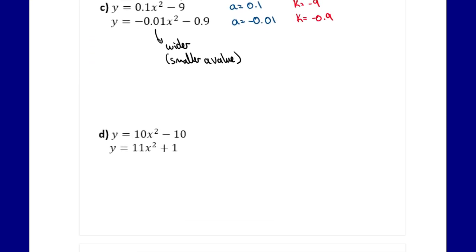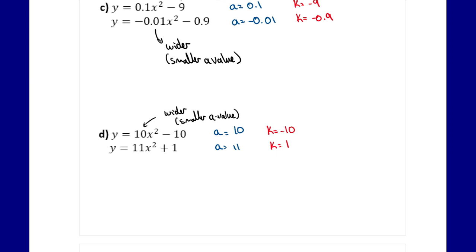For part d, the a values are ten and eleven, and the k values are negative ten and positive one. In terms of which is wider, it would be the first one because of the smaller a value. It is also farther from the x-axis because it is moved down ten, meaning the vertex is farther away, whereas the other one is only up one. So it's just looking at those two key variables.